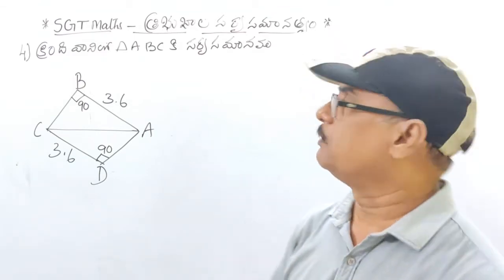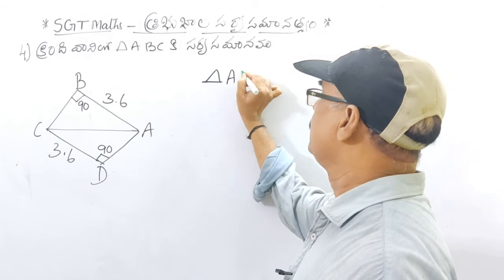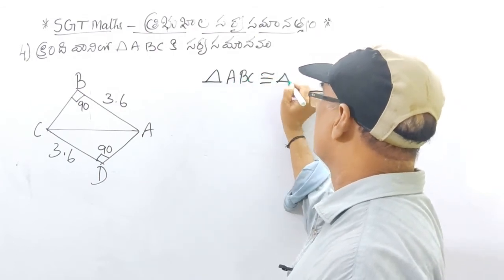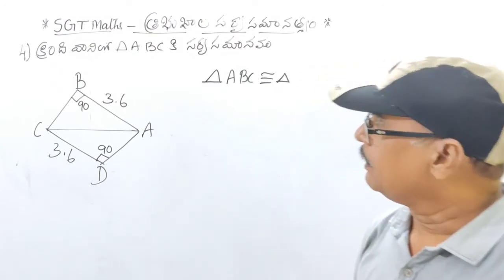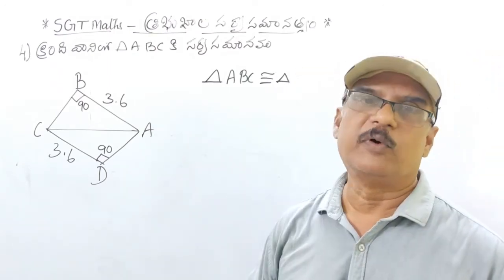In this, triangle ABC is sarvasamana. Triangle opposite to A - Lankabu ni munda - this is very important. If you practice 5 or 8 type problems like this, ABC is sarvasamana triangle.